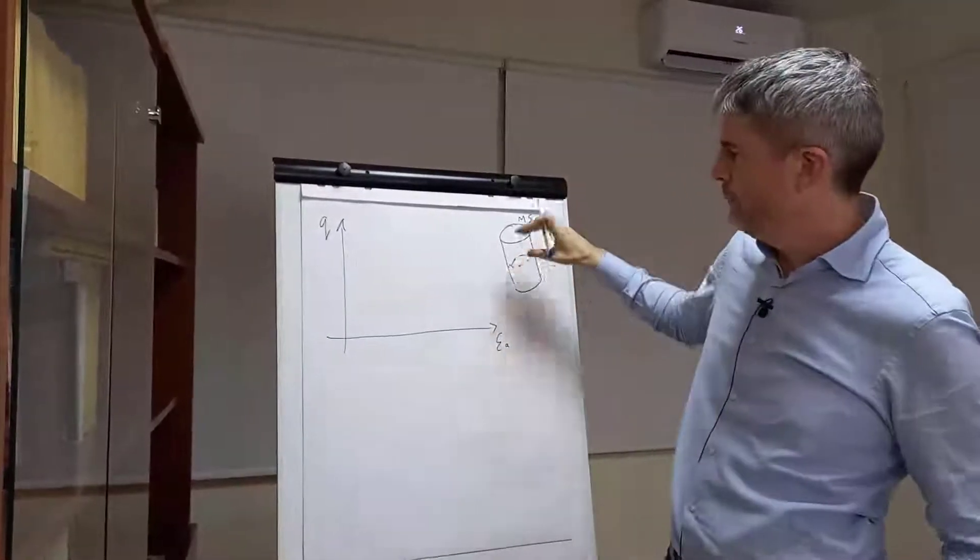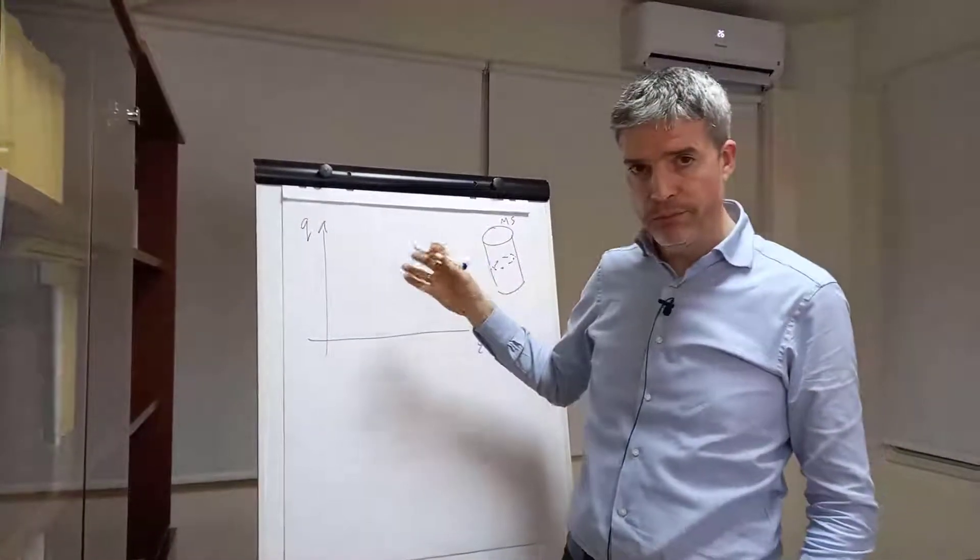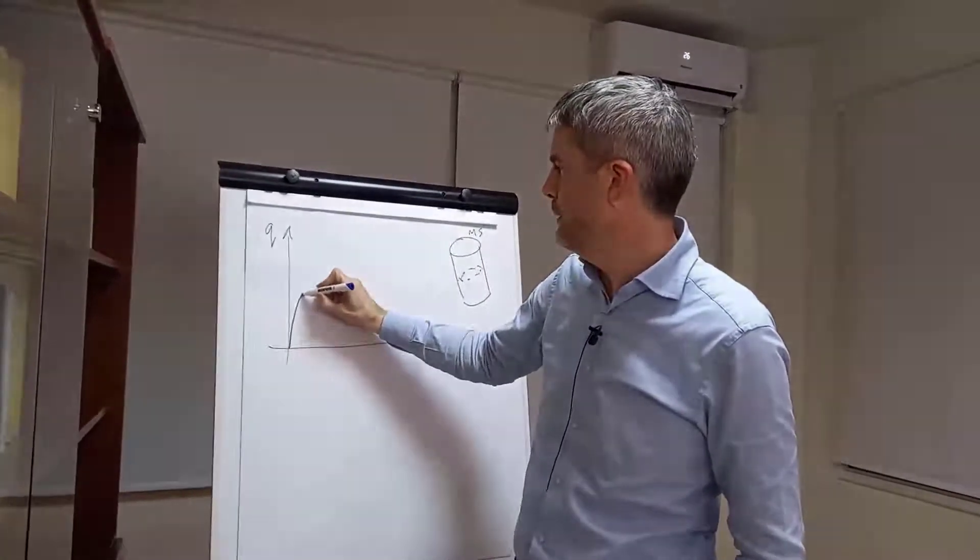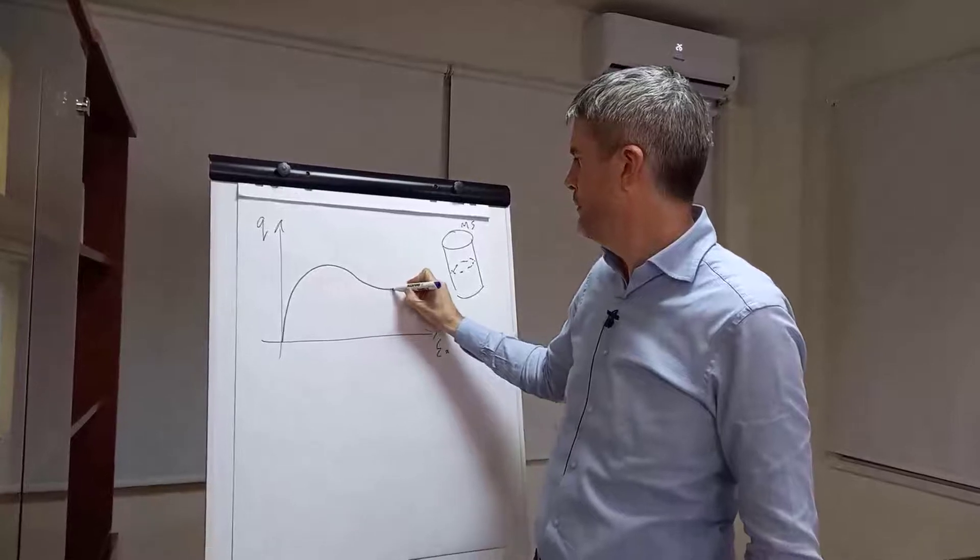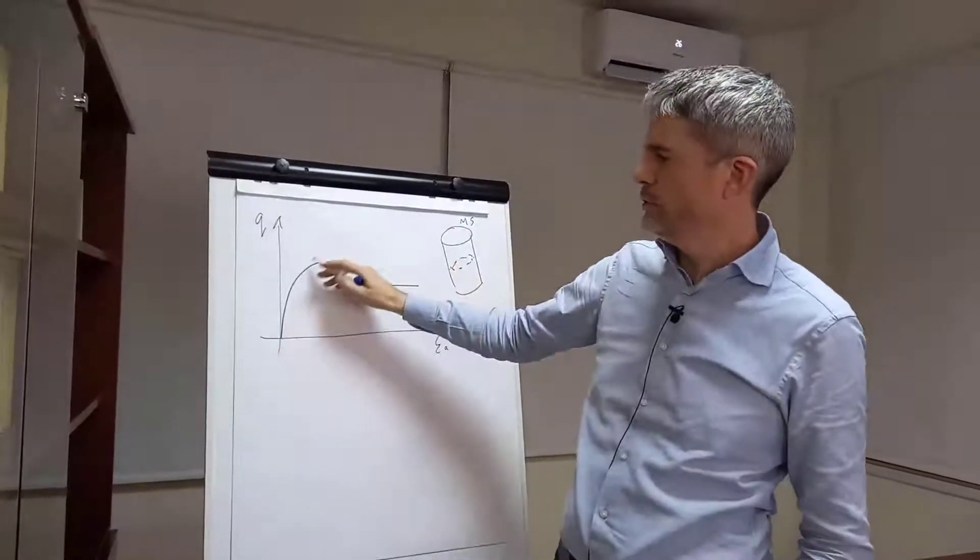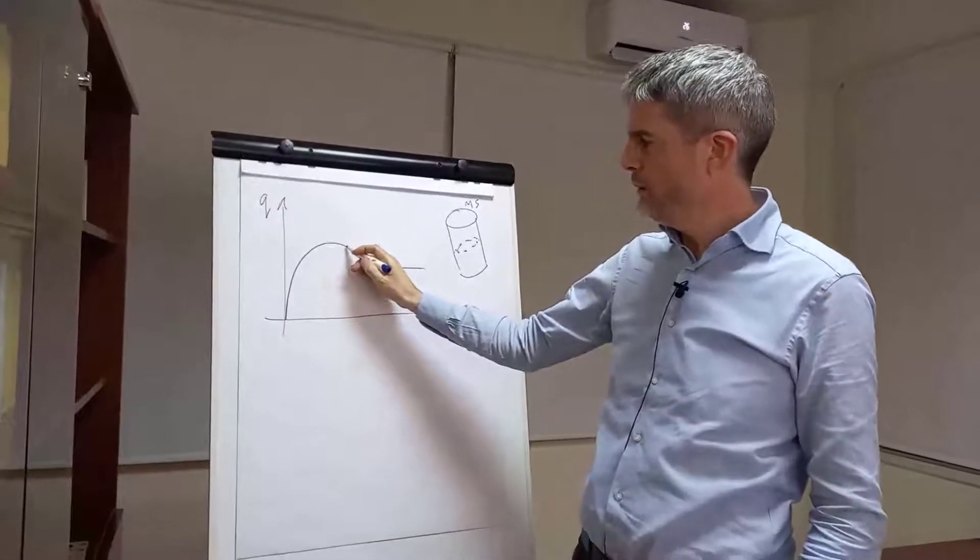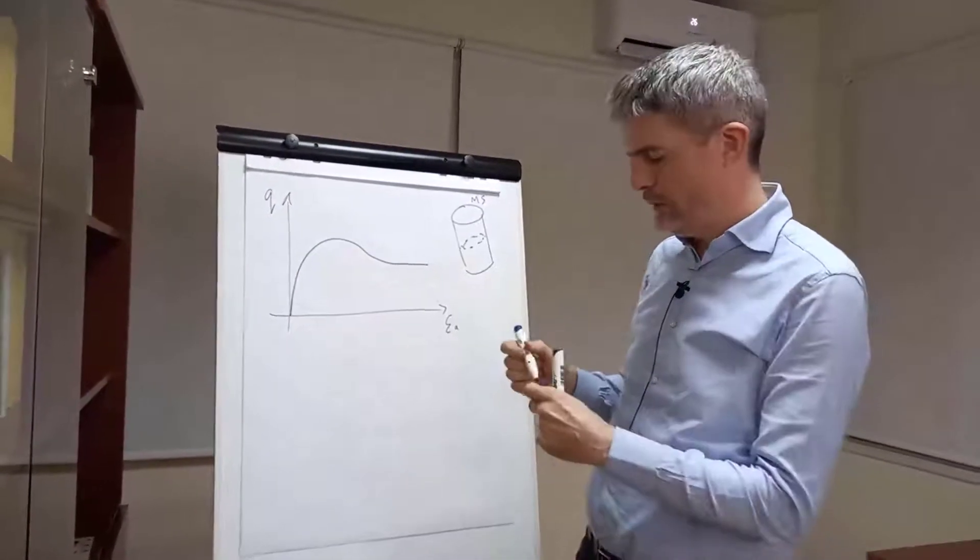If we do an aggregate without geogrid, non-stabilized as we call it, but it's well compacted and dense, we will get something like that. A classic shape of a dense aggregate. We get to a peak strength, then we get a dilation, some softening towards a critical state strength.